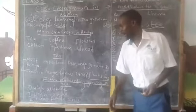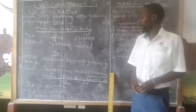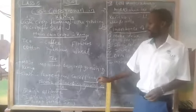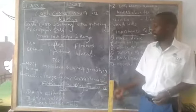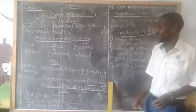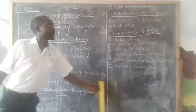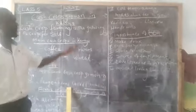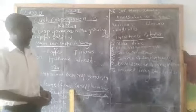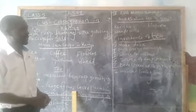Another factor is deep, fertile soils. These fertile soils are also supposed to have good drainage. Another factor is cool temperatures. Most of the areas where tea is grown experience cool climates.